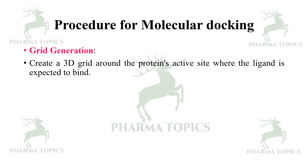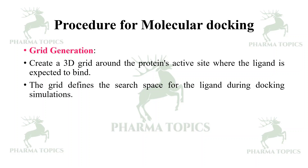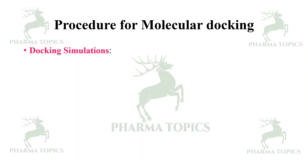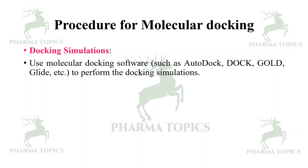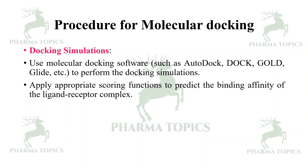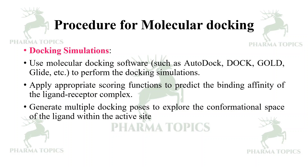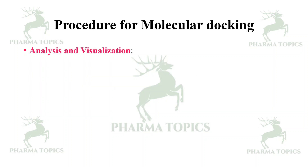For grid generation, create a 3D grid around the protein's active site where the ligand is expected to bind. The grid defines the search space for the ligand during docking simulations. For the docking simulation, use molecular docking software such as AutoDock, DOCK, GOLD, or Glide to perform the docking simulations, and apply appropriate scoring functions to predict the binding affinity of the ligand-receptor complex.